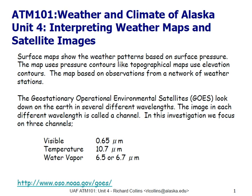The geostationary operational environmental satellites look down on the earth in different wavelengths — different colours, if you will. Each colour is an individual channel, and in this investigation we focus on three channels. The visible channel looks at sunlight reflected from the earth and atmosphere back to space — the view we would see if we were looking down on the earth ourselves. The temperature channel looks at 10.7 microns, the wavelength associated with the emission of heat from the earth at about 300 Kelvin.